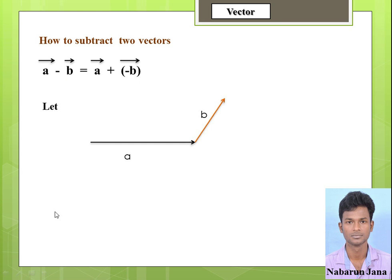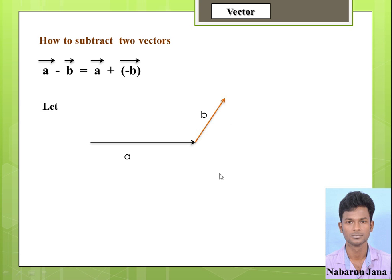Let this one be vector A and this one be vector B. We need to oppose vector B, that is negate vector B. To do that, we should just reverse the arrowhead — nothing else. The arrowhead is upward; now I am opposing the arrowhead. This resulting vector is called minus B vector.